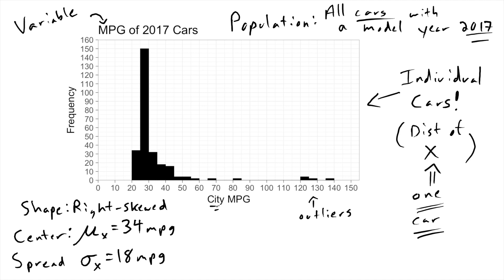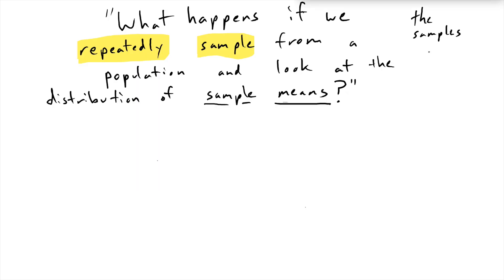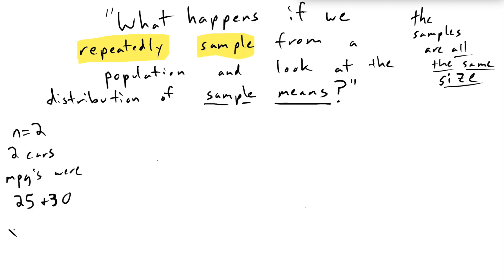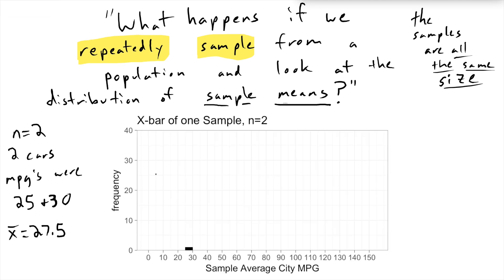Now let's look at what happens if we take a bunch of samples and look at the average of those samples. These repeated samples are all going to be the same size. Let's start with the smallest sample size we can possibly have, which is two. This is definitely a dinky sample. Suppose we found two cars — our x-bar is going to be the average of those two, which is 27.5. We might want to display this in a distribution. It looks a little silly; we just have one sample, one x-bar.